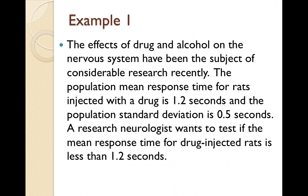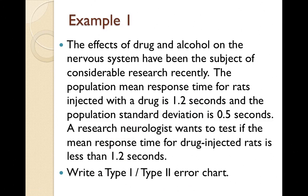Here's our first example. The population mean response time for rats injected with a drug is 1.2 seconds, and the population standard deviation is 0.5 seconds. A research neurologist wants to test if this mean response time is less than 1.2 seconds — that's the counterclaim, the alternative hypothesis. Before conducting the full hypothesis test, let's make the type 1 and type 2 error chart.